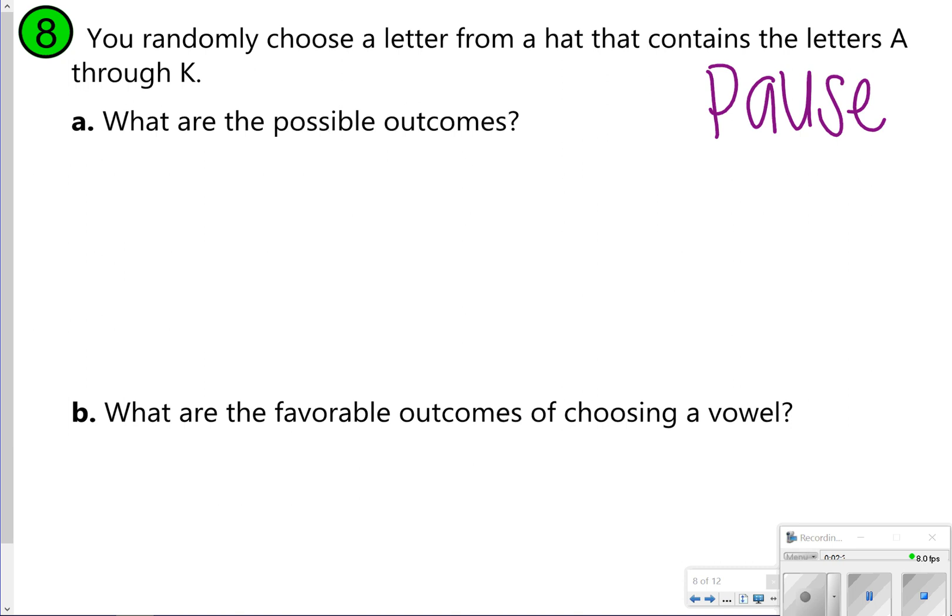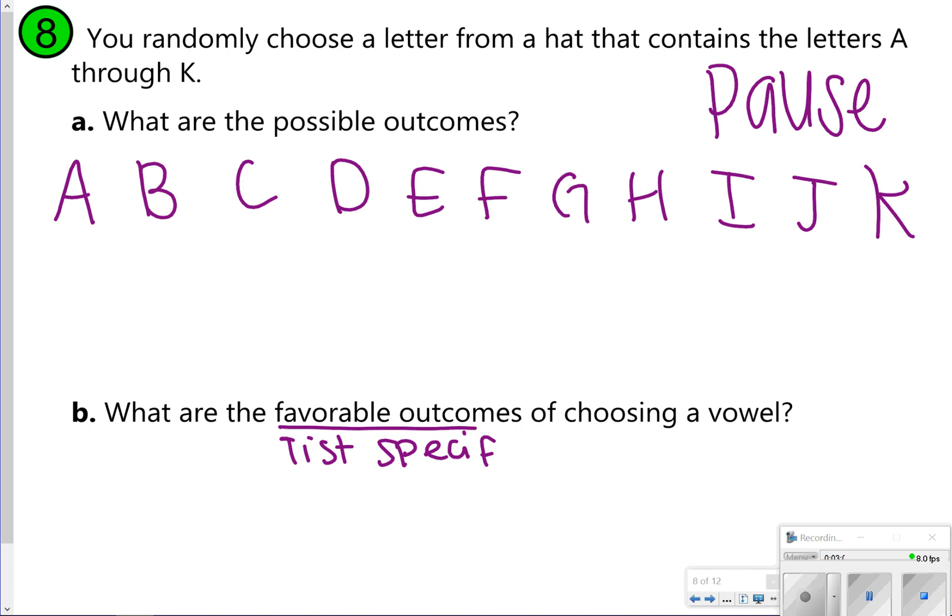Okay, for number eight, it says you randomly choose a letter from a hat that contains the letters A through K. So in 8A, what are the possible outcomes? Those are all of the letters: A, B, C, D, E, F, G, H, I, J, and K. Oops, probably need to write a K right there instead of an H. My bad. The next one says, what are the favorable outcomes of choosing a vowel? Remember, you need to be writing a list specifically about these outcomes. So those vowels will be A, E, and I in this list. How did you do?